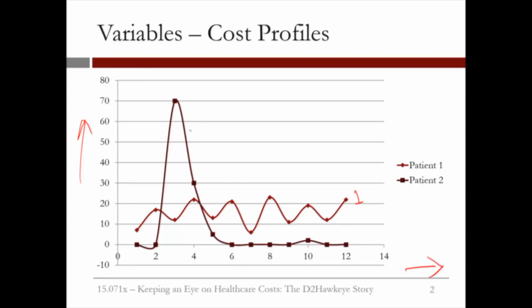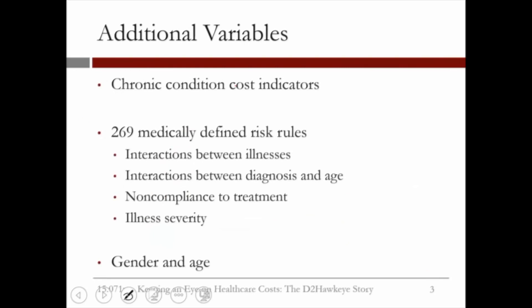Patient 2 has also an annual cost of a similar size to Patient 1, but in all but the third month, the costs are almost zero, whereas in the third month there was a cost of about $70,000. In fact, this is an additional variable we defined, indicating whether the patient has a chronic or an acute condition.